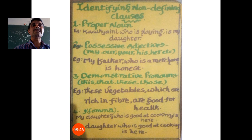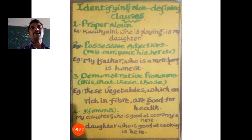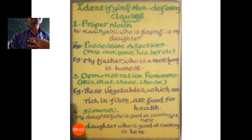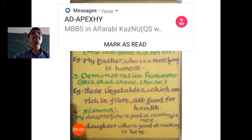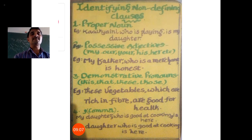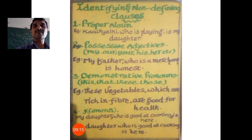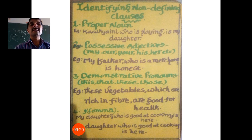The second clue: possessive adjectives. Possessive adjectives in English are my, our, your, his, her, etc. For example, 'My father, who is a merchant, is honest.' 'My father' — the identity is already given. 'Who is a merchant' is additional information about my father. 'My father is honest' is enough. The additional information is given by the relative clause.